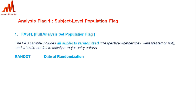The first category is Analysis Flag 1, which relates to subject-level population flags. These are flags applied to one subject across all their records, which is why we call them subject-level population flags.